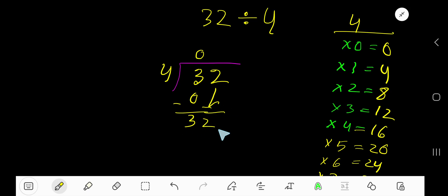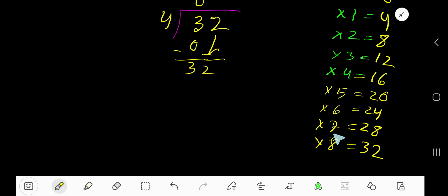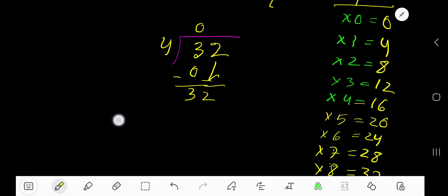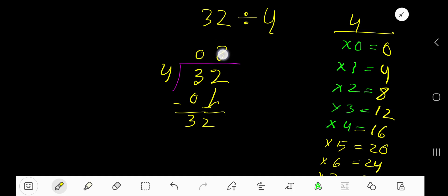So now 4 goes into 32 how many times? Look, 4 times 8 which is 32. So 8 times. 8 times 4 is 32. If you subtract, you are getting 0. So your answer is 8.